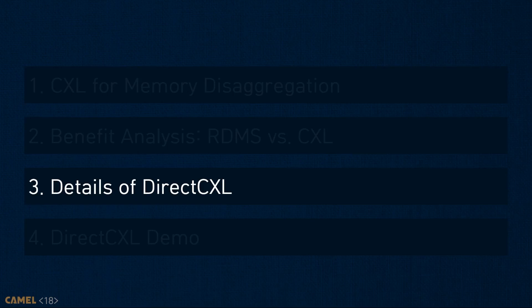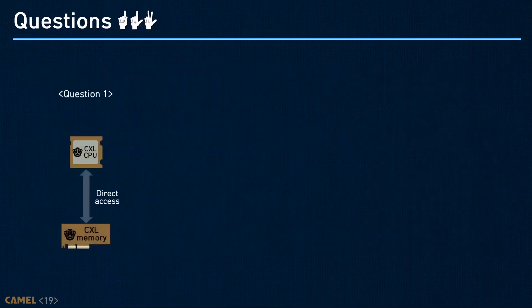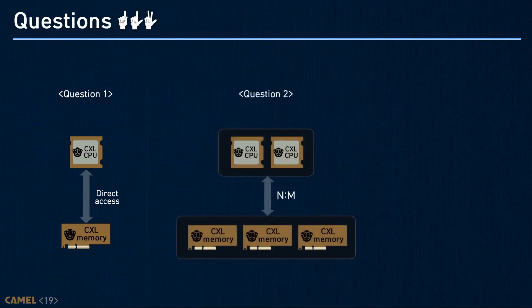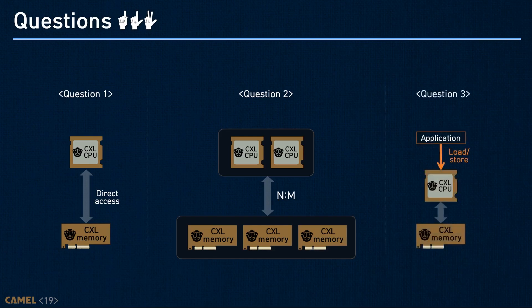In this section, I will explain how we designed DirectCXL by answering three design questions. First: how can the CPU directly access remote memory? Second: how do we realize memory disaggregation using CXL? And third: how can an application use CXL-attached remote memory?